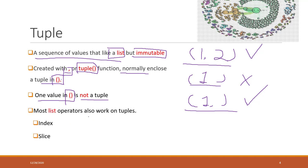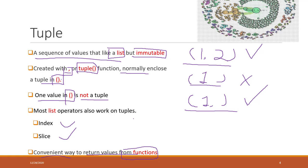Most list operators also work on tuples — you can use indexing or you can also slice the tuple. The reason we want to use tuple: in most cases, we use a tuple as a convenient way to return values from functions. A function is a piece of Python code that allows you to perform a task repeatedly. Normally the function will return a result, and we put that result into a tuple so that the values cannot be changed.